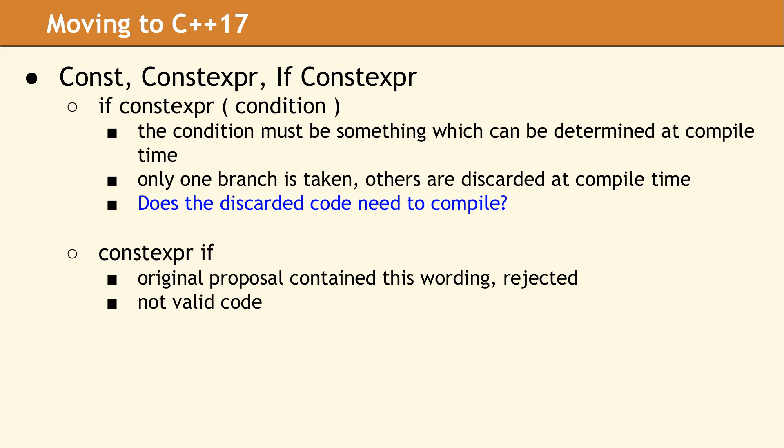The really interesting question with if constexpr is whether the code in the branches which are not taken need to be well-formed code which compiles. It turns out this is actually a good interview question. When the if constexpr statement appears in the body of a template, the discarded branches do not need to be well-formed. However, an if constexpr in a non-template function or method will require that all branches must compile, even though only one branch will be used.